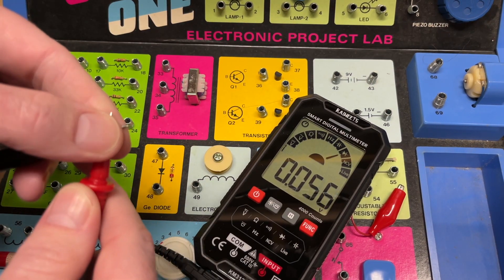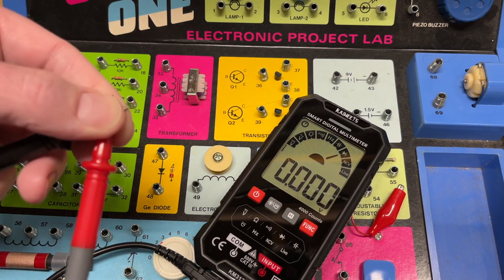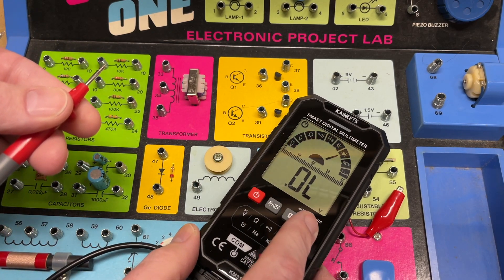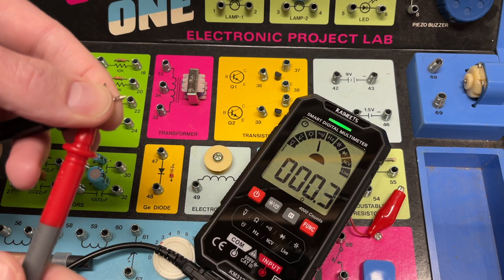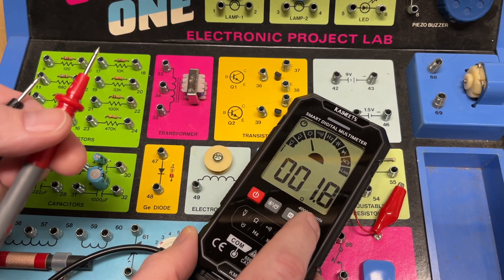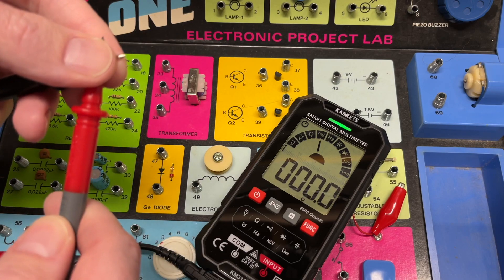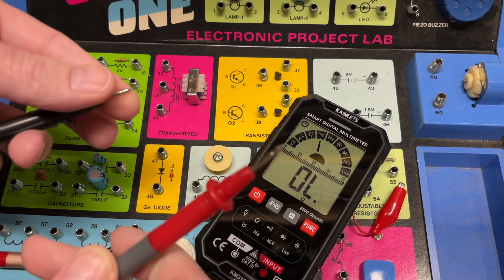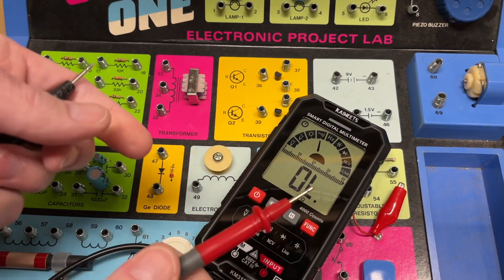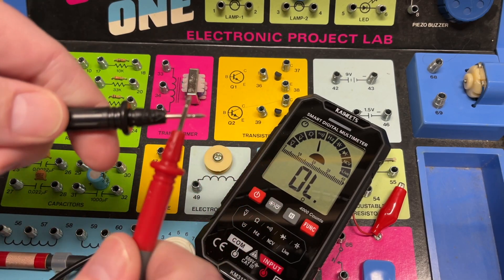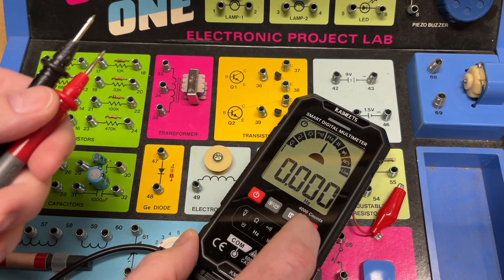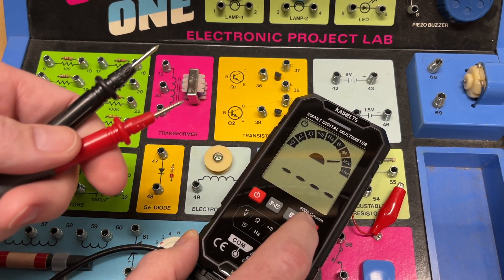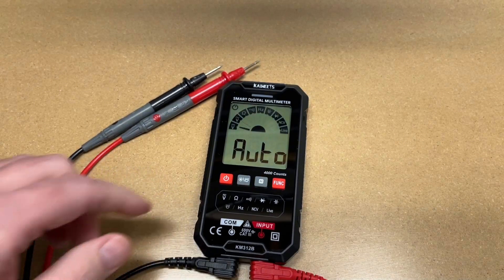We also have continuity test. If I hold these down together, let me go to smart mode. If I hold these down there's continuity, and you can just switch manually to that mode also. That seems a little bit faster if I actually switch to the mode. If you're in smart mode you can use continuity, but if you're doing a lot of continuity it's probably best to just switch to continuity mode.